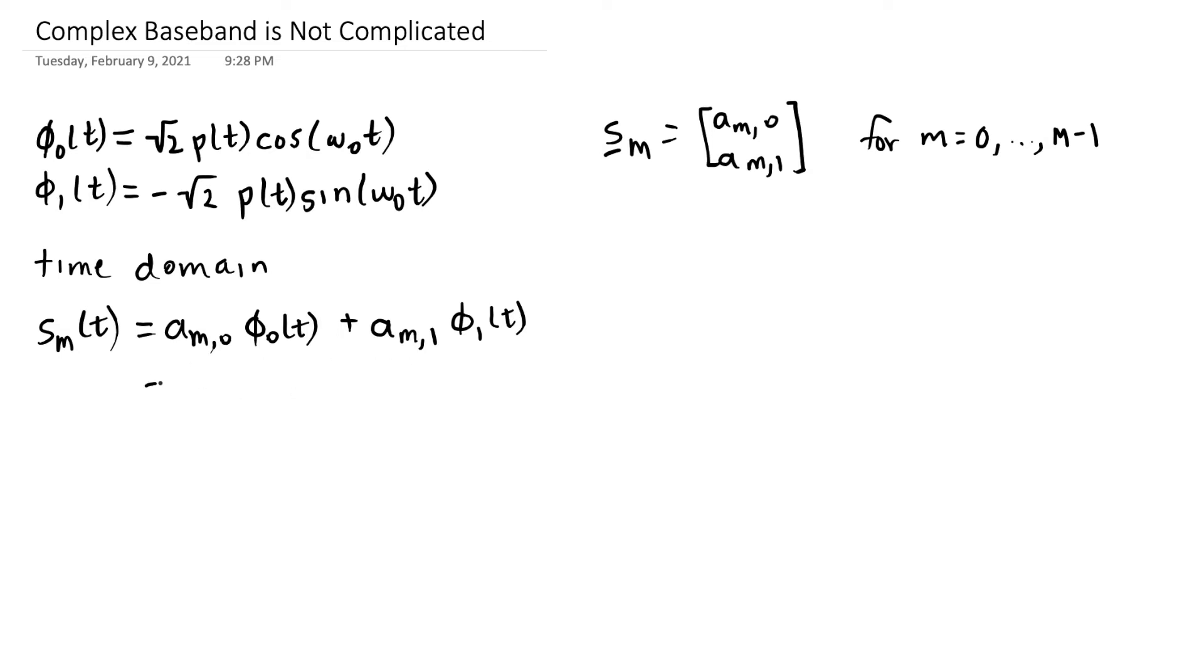So let's plug in phi_0(t) and phi_1(t). So I just plug in the cosine and the sine terms with the amplitudes of square root of 2 and minus square root of 2 in the pulse shape and then I'll simplify.